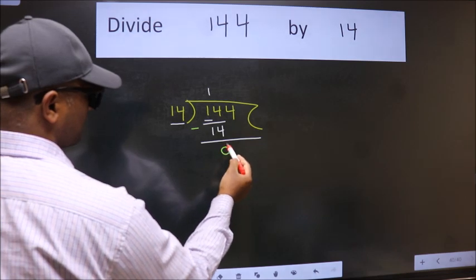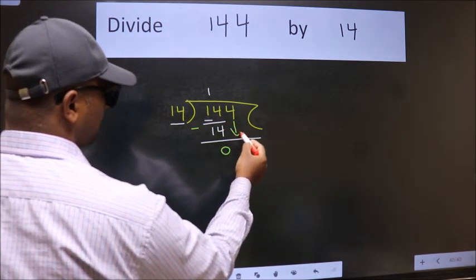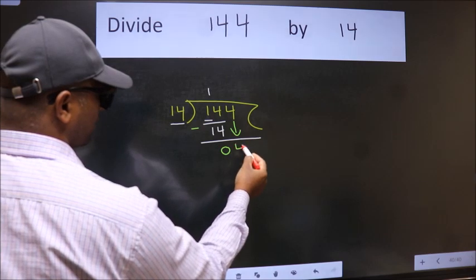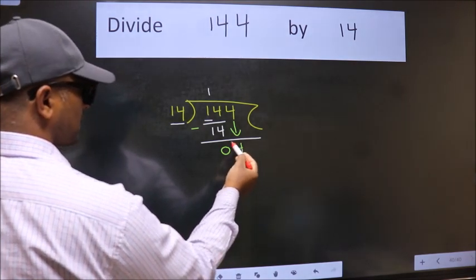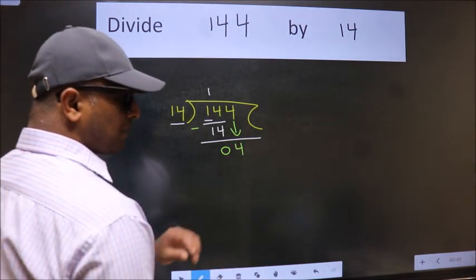We get zero. After this, bring down the beside number, so 4 down. After this step, the mistake happens, and the mistake is this: